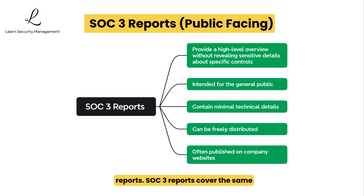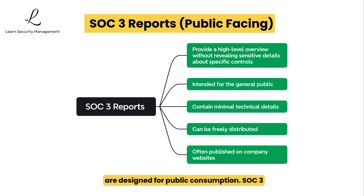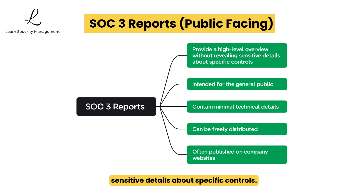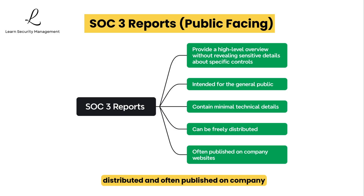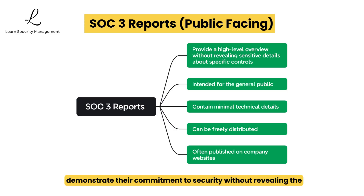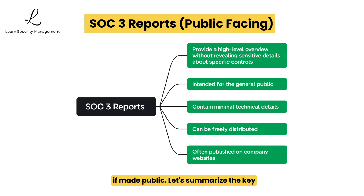Then there are SOC 3 reports. SOC 3 reports cover the same trust services criteria as SOC 2 but with a crucial difference: they are designed for public consumption. SOC 3 provides a high-level overview without revealing sensitive details about specific controls. These are intended for the general public and less technical stakeholders, contain minimal technical details, and can be freely distributed — often published on company websites. Organizations often use SOC 3 reports as marketing tools to demonstrate their commitment to security without revealing technical details that might create security vulnerabilities if made public.